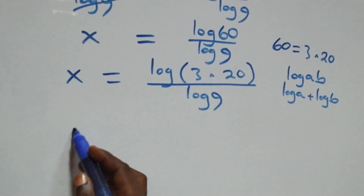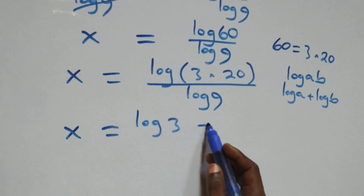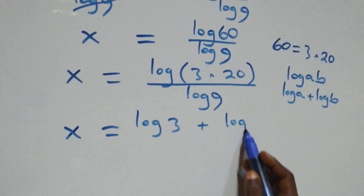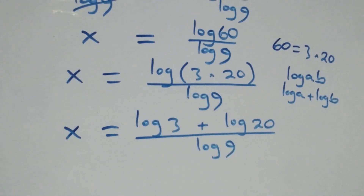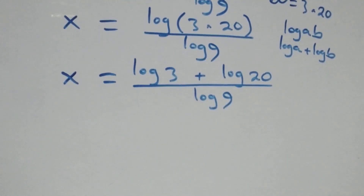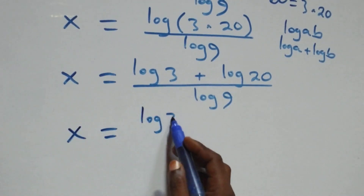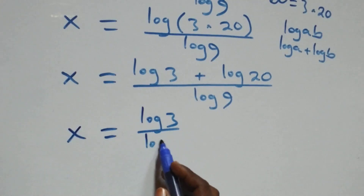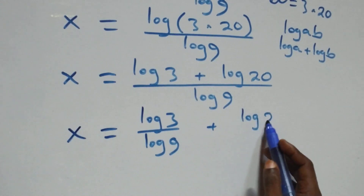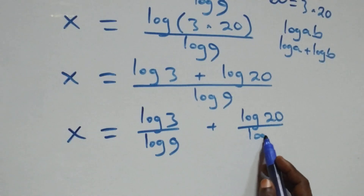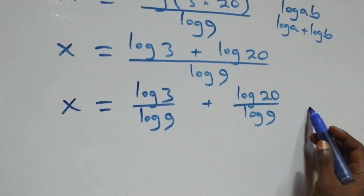We separate this into two fractions: x equals log 3 over log 9, plus log 20 over log 9. Now we can also express 20 as 4 times 5.